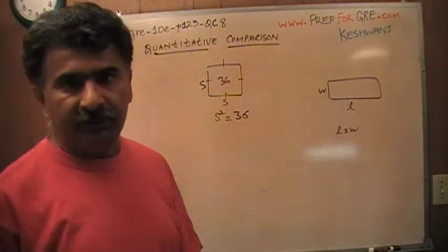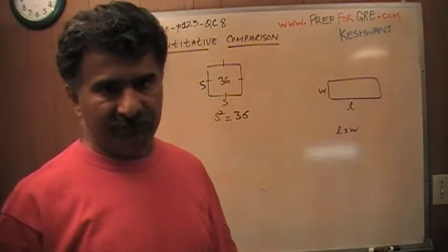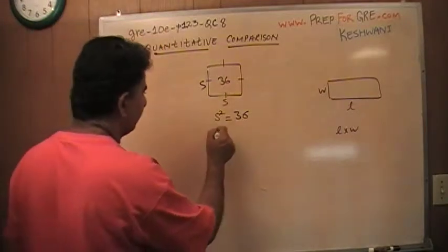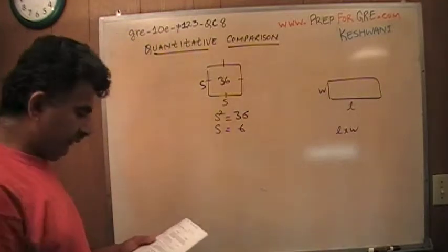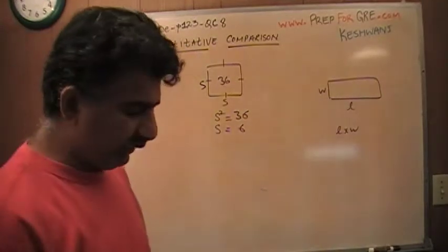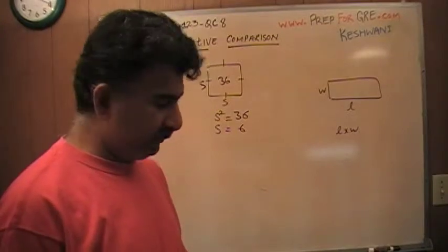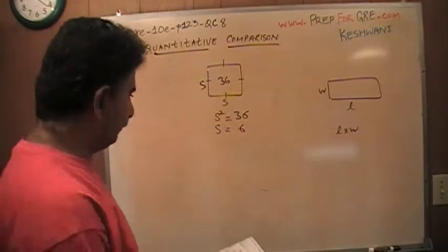we are told that equals 36. Well, if that equals 36, then the side must be 6. Now in column A, we are asked to compare the perimeter of this versus 24.